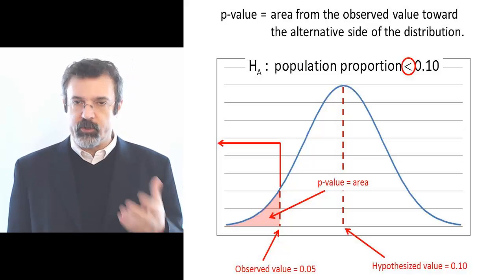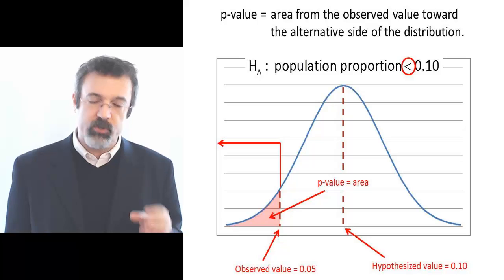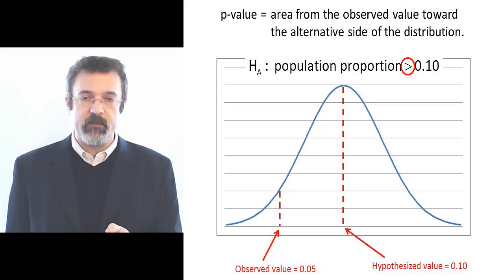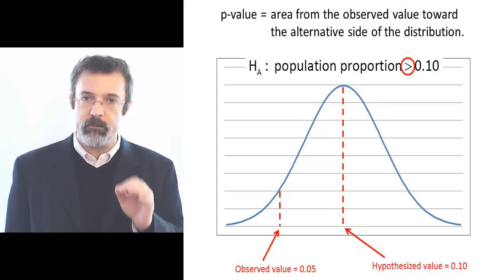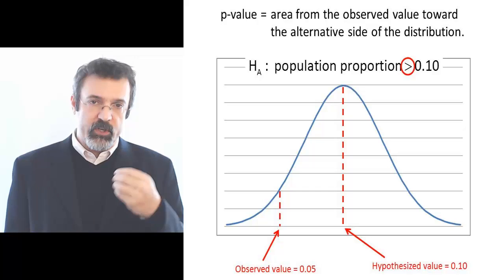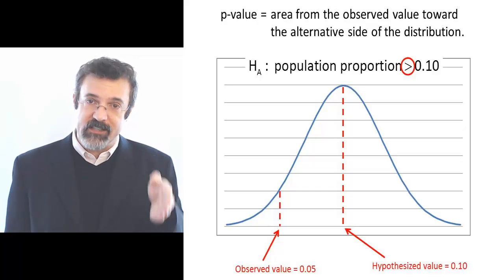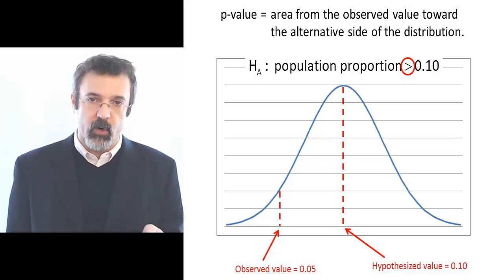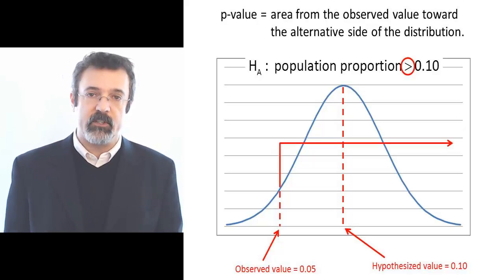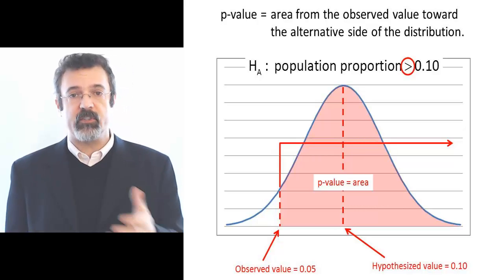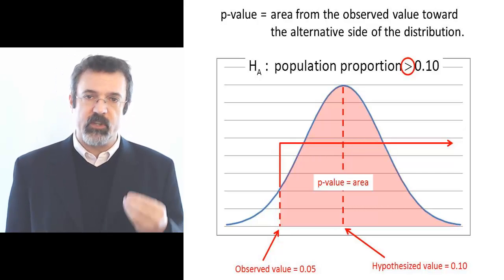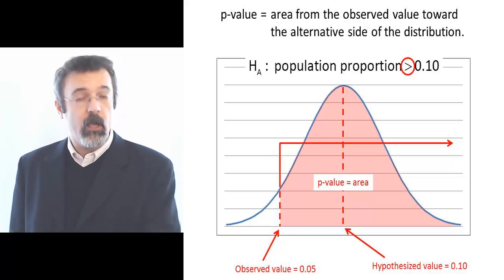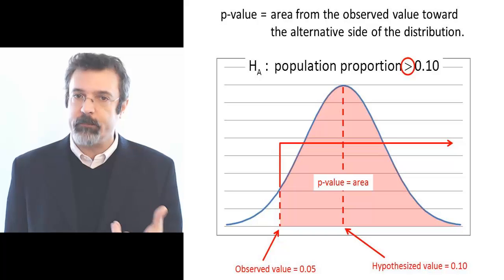Suppose instead we select the alternative hypothesis that the proportion of marbles in the bag is greater than 10%. Again we picture the distribution. The center point is what we're assuming to be true — that 10% of the marbles are white. We show what we observe: a sample with 5% white marbles. The p-value is the area from what we observe toward the alternative side of the distribution — in this case, the area to the right. This area represents the probability of drawing a sample containing 5% or more white marbles when in fact the bag contains 10% white marbles.